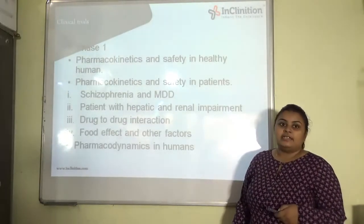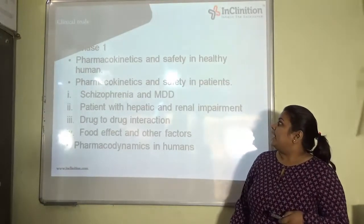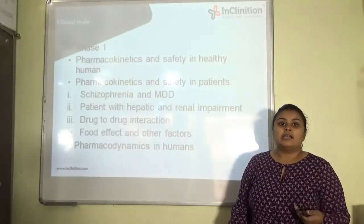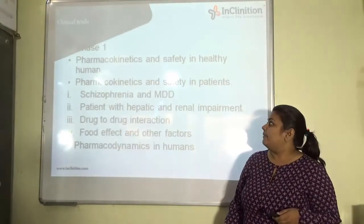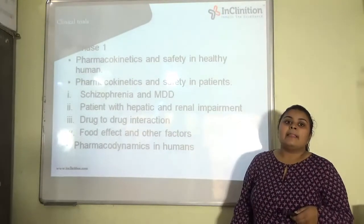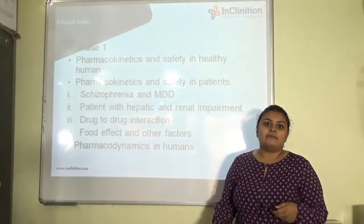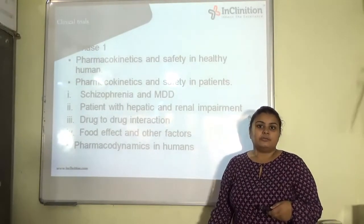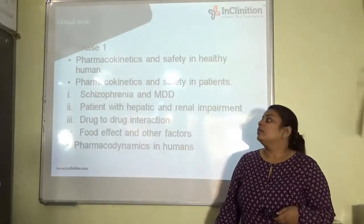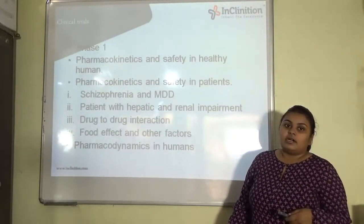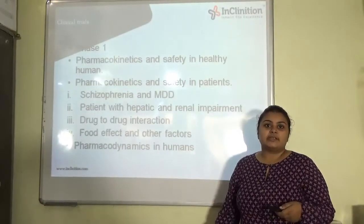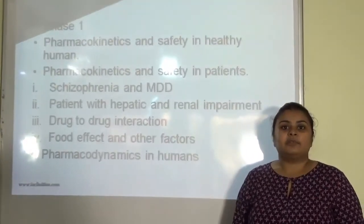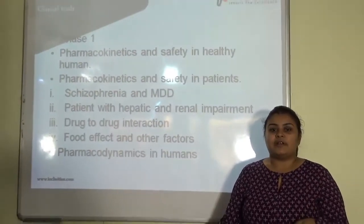Now for clinical trials, Phase 1 trials were conducted in which humans were given the drug and studied for pharmacokinetic parameters — it had no harmful effects. The pharmacokinetic parameters like Cmax, AUC, and all were shown to have a good profile. For pharmacokinetic and safety studies, patients who had depression or schizophrenia were also studied, and the pharmacokinetic profile was similar to those found in healthy individuals.